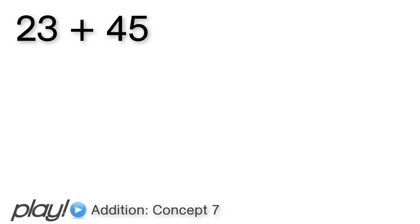When we add, we always start with the units digits first. So 3 plus 5, those are our units digits, give us 8 units.